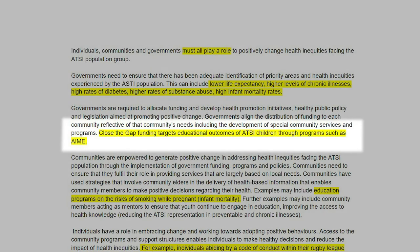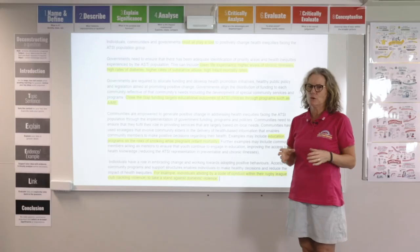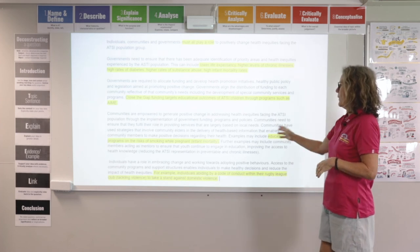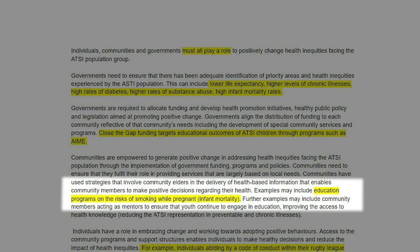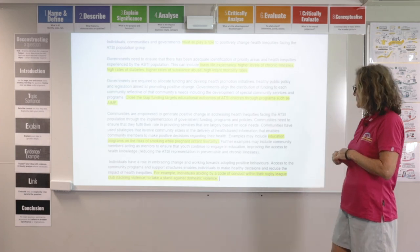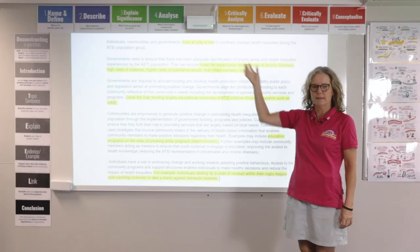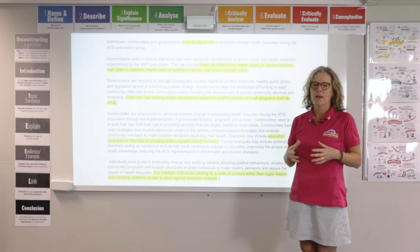A couple of other things I've highlighted: Close the Gap is their example, but they haven't really made any significance of that example or linked it to the health inequities — make sure you do, that's a really important part. I also highlighted education because even though they weren't talking about determinants explicitly, the education programs about smoking relate to the socio-economic determinant of education. Down the bottom you can also see they're trying to link it to infant mortality and tackling domestic violence, which are the actual health inequities that ATSI people face — make sure you link specifically to those health inequities.